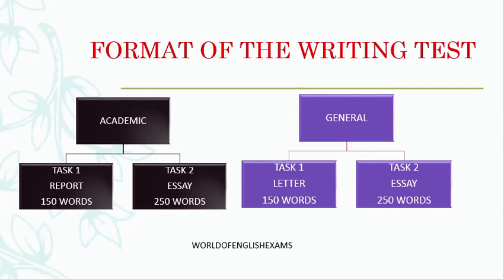Moving on to the general training test — here also you would be getting 2 tasks and both must be completed within 1 hour. Task 1 for a general student is a letter, and the minimum word count is 150 words. Task 2 is the same as for academic students: an essay with a minimum word count of 250.